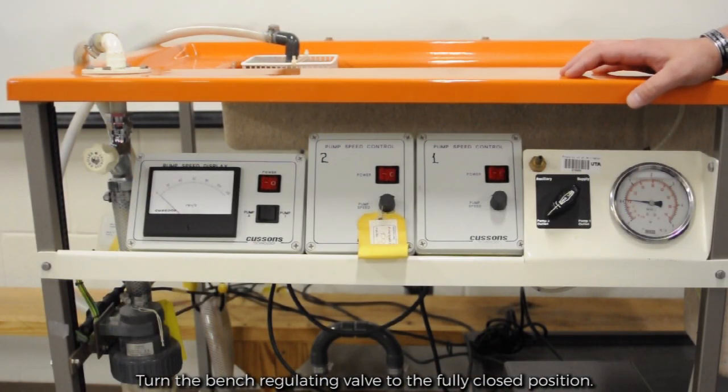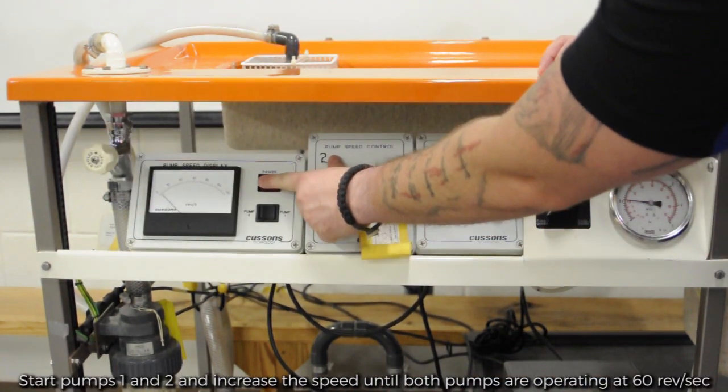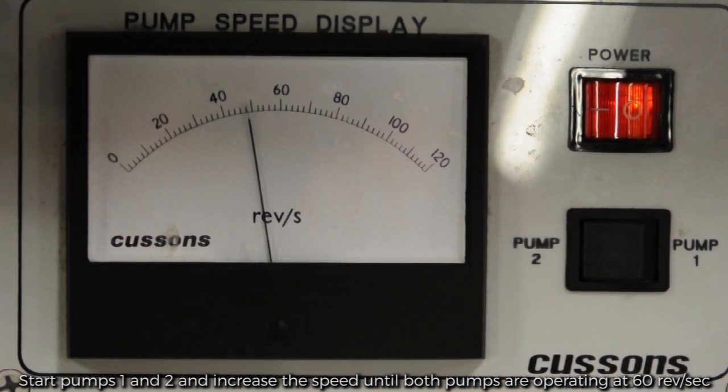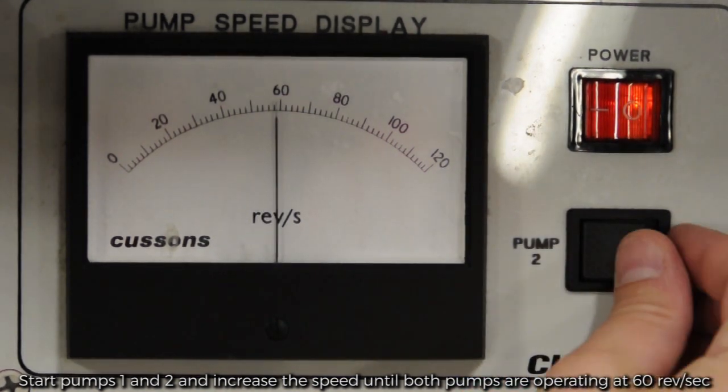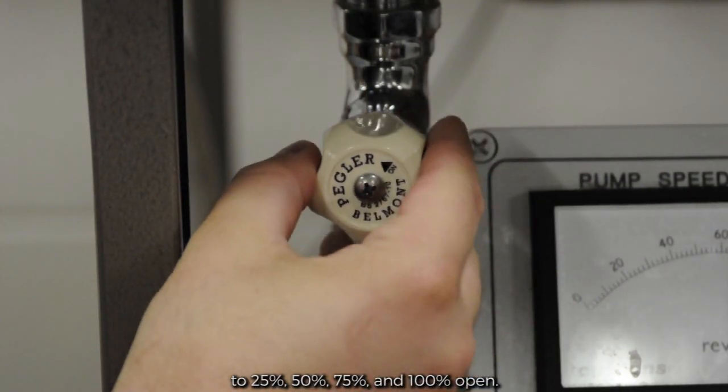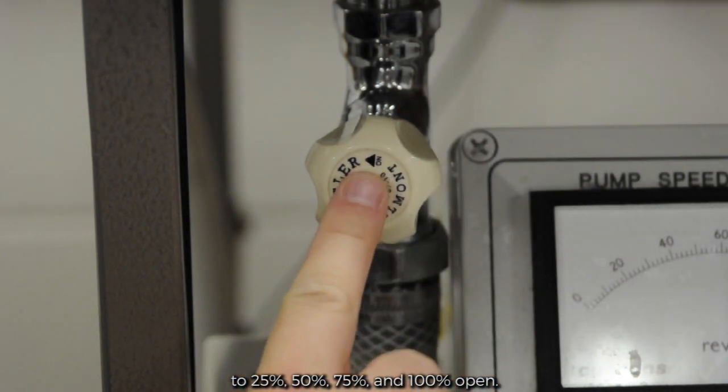Turn the bench regulating valve to the fully closed position. Start pumps one and two and increase the speed until both pumps are operating at 60 revolutions per second. Repeat the previous step by regulating bench outlet valves set to 25%, 50%, 75%, and 100% open.